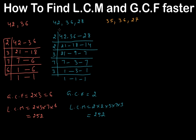Compare this to the other method, where you'd need to write out all the multiples of 42, then all the multiples of 36, then all the multiples of 28, and find the least one common to all three. That means writing 42 times 1, 42 times 2, and so on — a lot of work. This method is much faster.